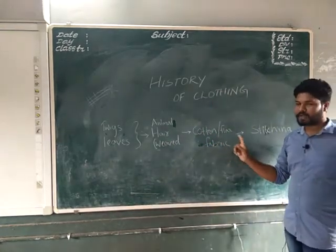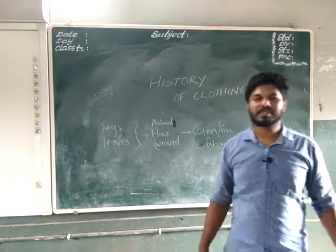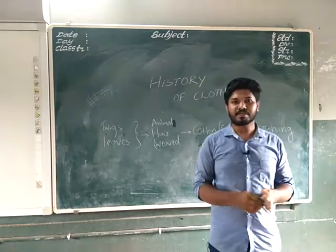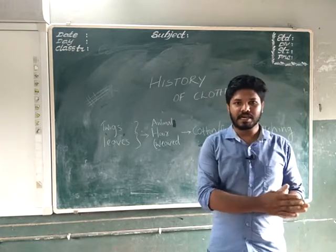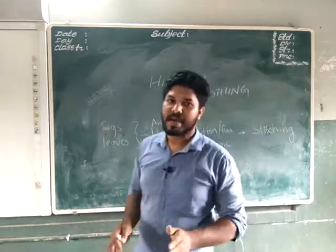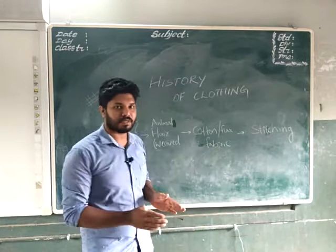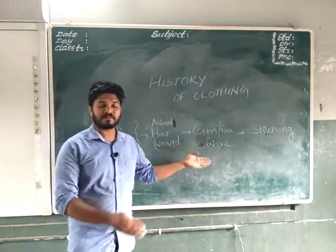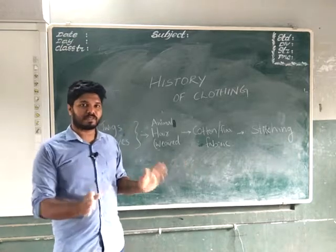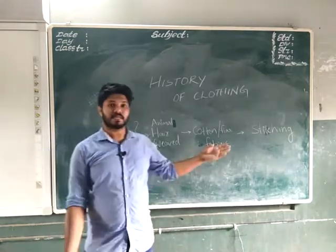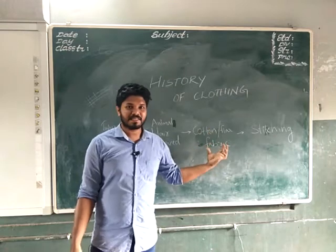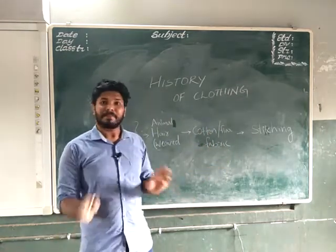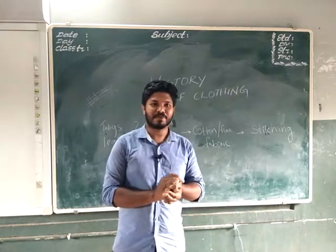The next source was cotton or flax — cotton and flax are similar types of fabric-providing plants. They were grown on the banks of the River Ganga in India and also along the banks of the River Nile in Egypt. From these plants, people obtained fabric that they used to wear.